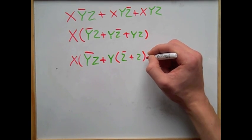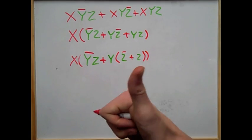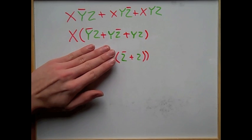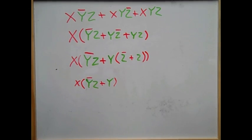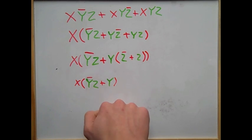And that, by one of the theorems, can simplify down to one. So when we distribute the y with the one, we're just going to be left with x and not y, z, or y.